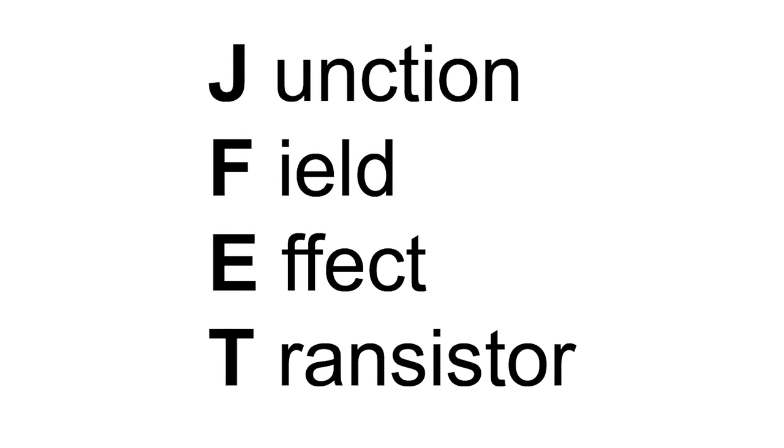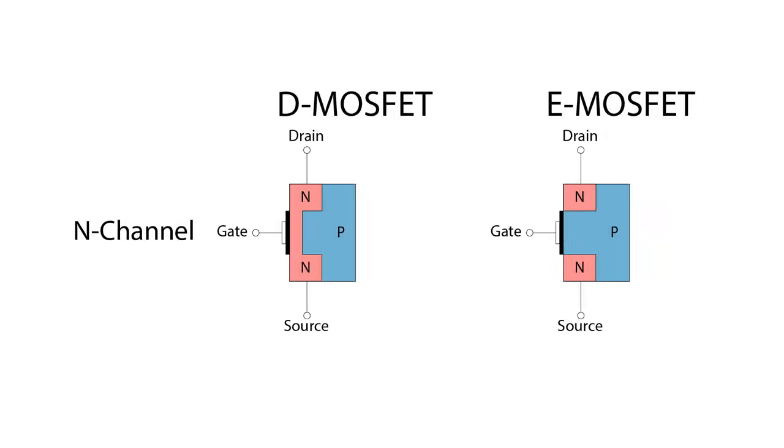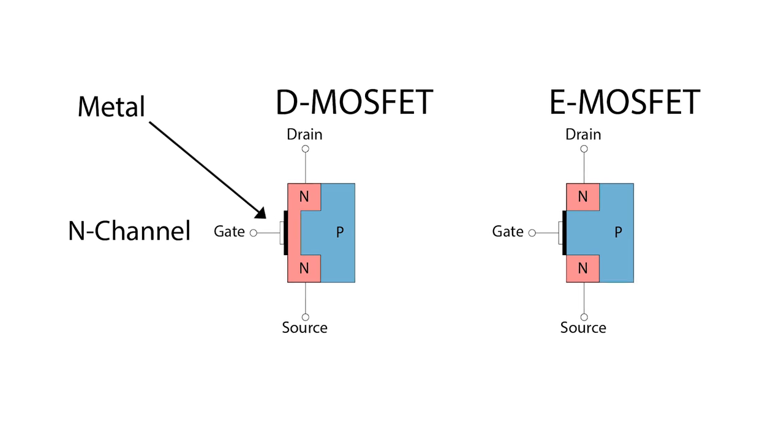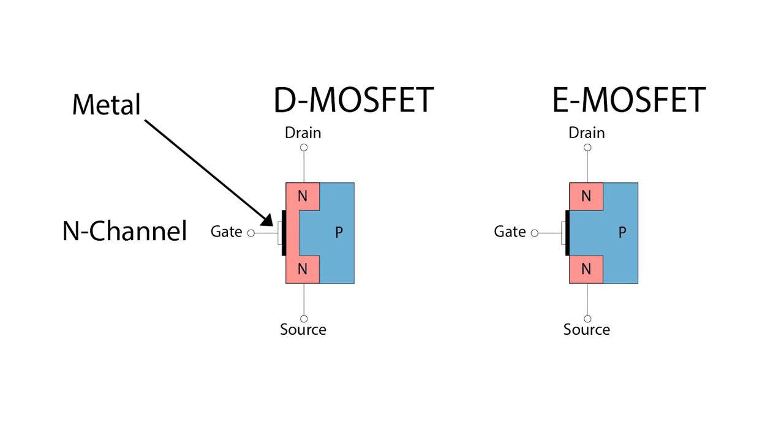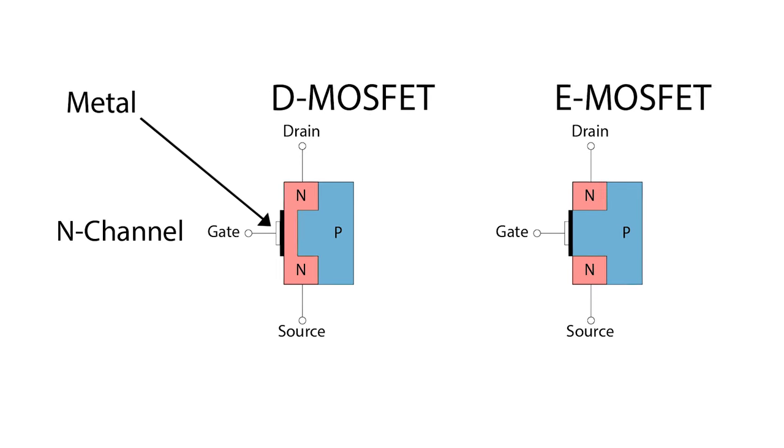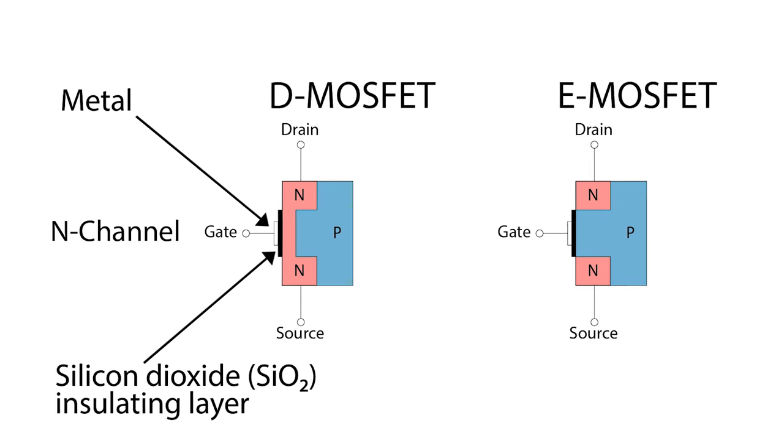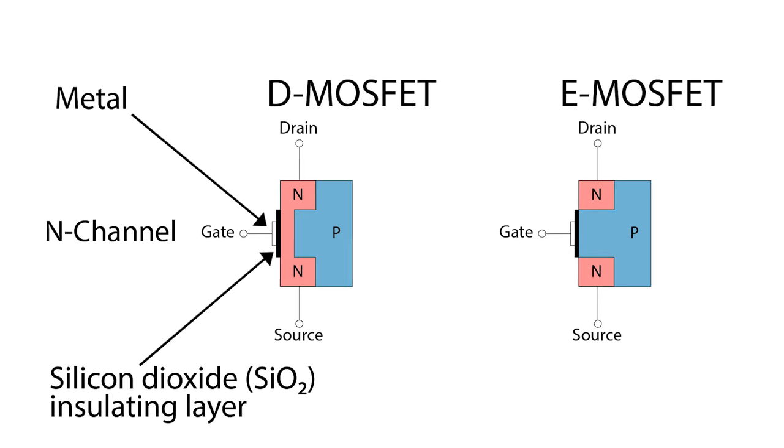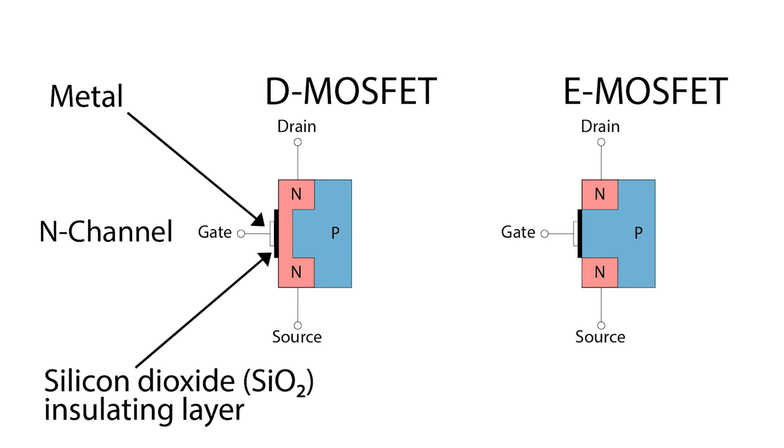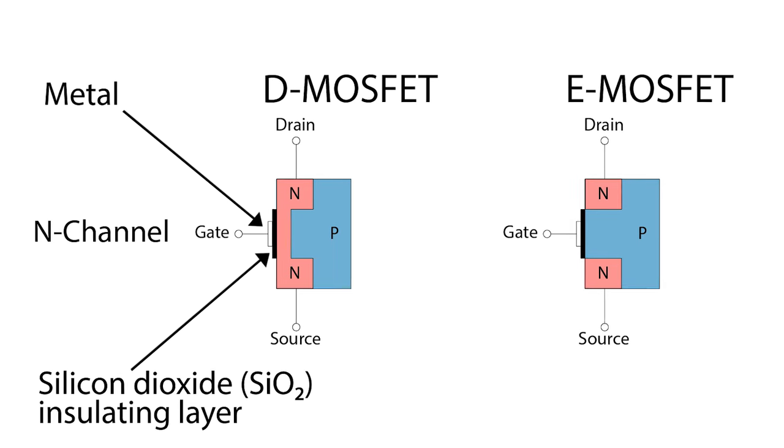JFETs are junction field effect transistors, using their PN junctions to affect the fields within the device. MOSFETs have a metal oxide semiconductor. The name comes from the metal conductor of the gate, which connects to a silicon dioxide insulating layer that is between the gate terminal and the semiconductor that makes up the substrate in the rest of the component.